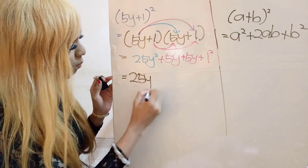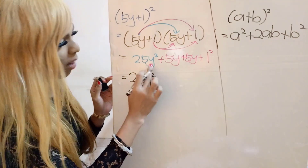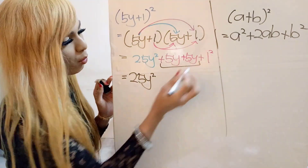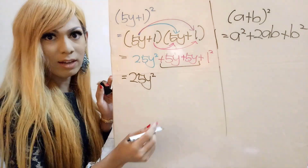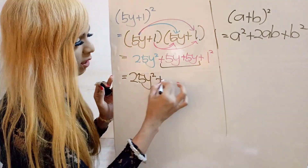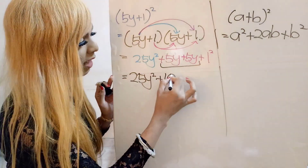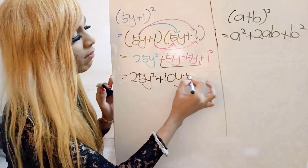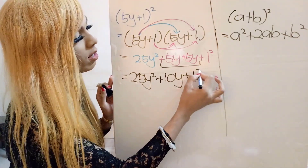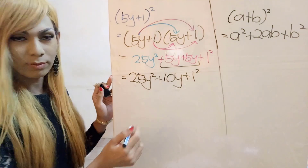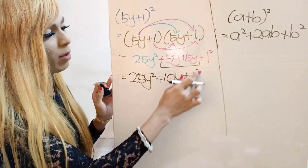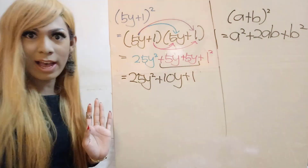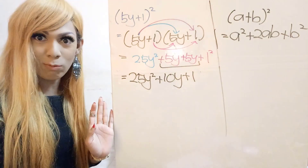So combining: 25y squared, then 5y plus 5y gives plus 10y, and 1 squared is just 1. So the answer is 25y squared plus 10y plus 1. That's the normal method.